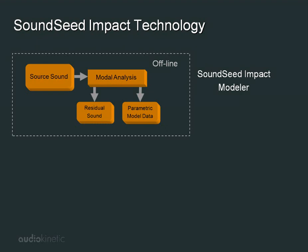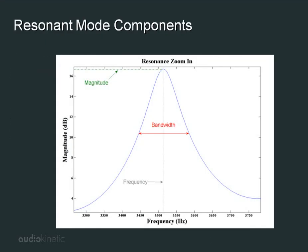Using sophisticated signal processing techniques, the Impact Modeler extracts the resonant content from a source audio file. It takes the components of the source file and outputs two separate files: the first being the residual file, which is essentially the source file with all the resonant content removed, leaving essentially a noise-only file. The second file is a small text file that contains specific information, including the frequency, magnitude, and bandwidth that describes each detected resonant mode.